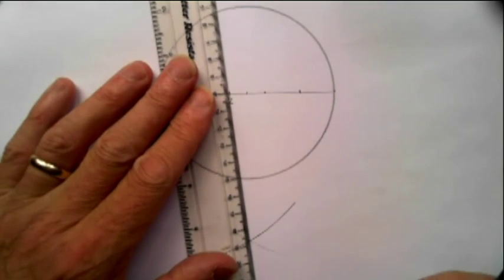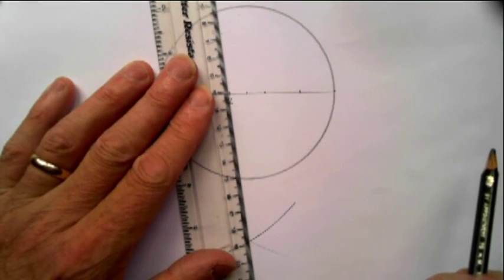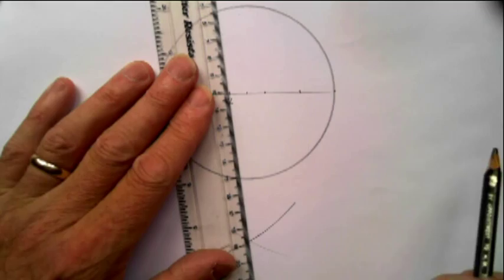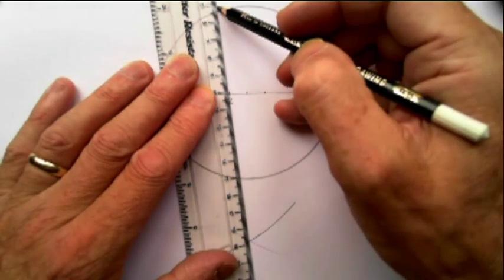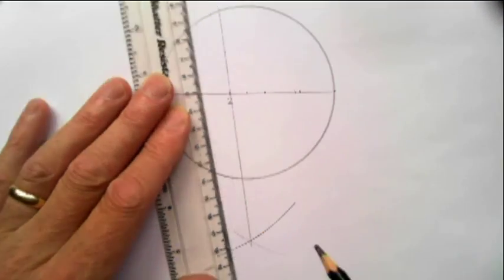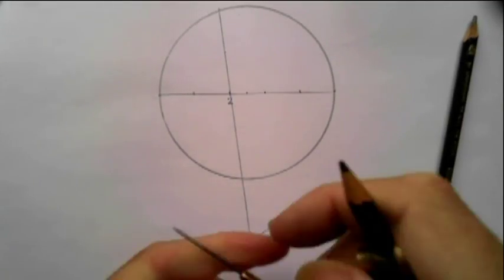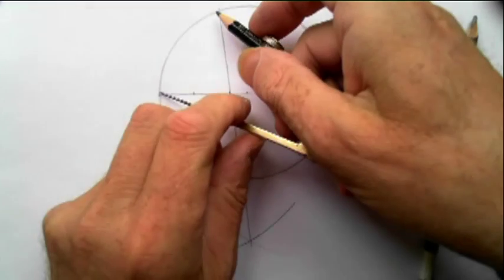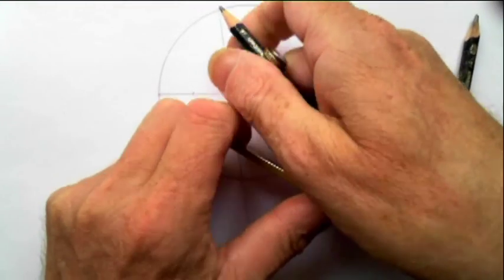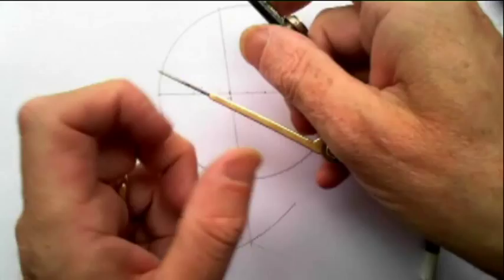Draw a line between number two and where the arcs cross, like that. This distance here is the side of your pentagon.